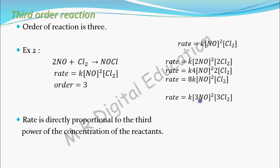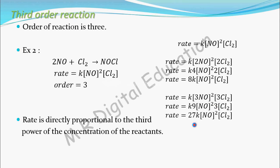Now let's increase both concentrations three times. Taking 3 outside for NO gives 3² = 9, and for Cl₂ gives 3¹ = 3. So 9 × 3 = 27. The rate equals 27 × K × [NO]² × [Cl₂]. The rate is increased 27 times, which means 3³ — three cubed — times the rate is increased when you triple the concentration of both reactants.